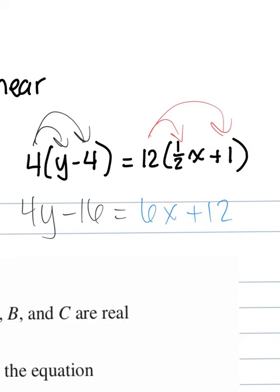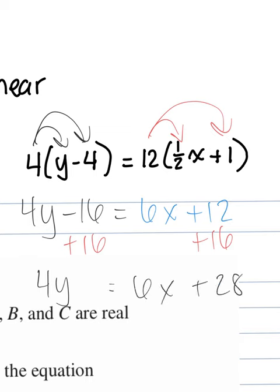To turn it into y equals mx plus b form, you add 16. You add 16 to the 12, not the 6x, because of like terms. 12 and 16 will add up to 28, so we have 4y equals 6x plus 28. What's the last step to put it in y equals mx plus b form?